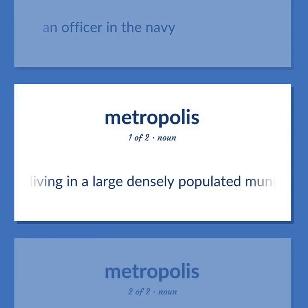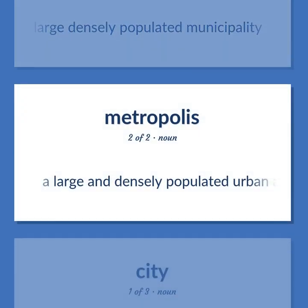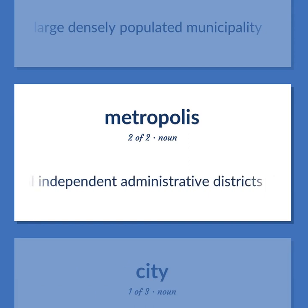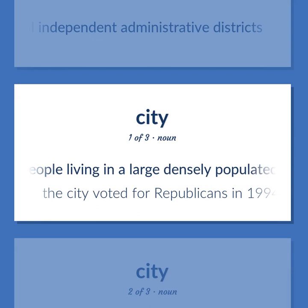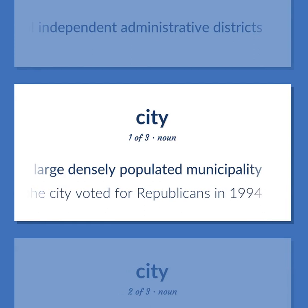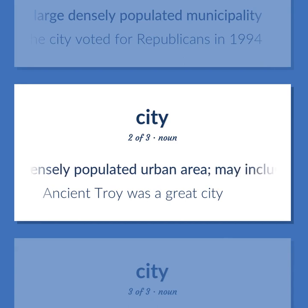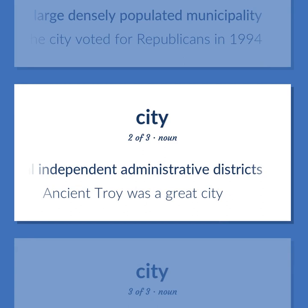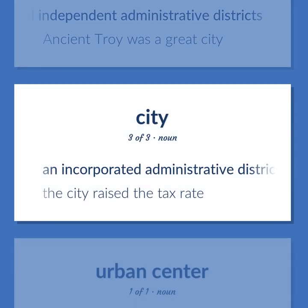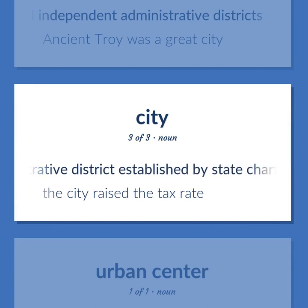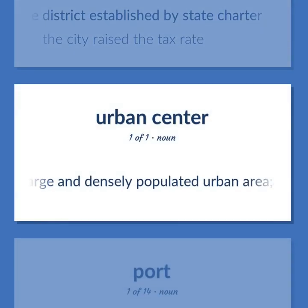City: People living in a large densely populated municipality. A large and densely populated urban area, may include several independent administrative districts — e.g., ancient Troy was a great city. The city voted for Republicans in 1994. An incorporated administrative district established by state charter — e.g., the city raised the tax rate.